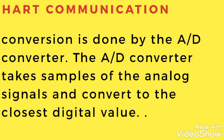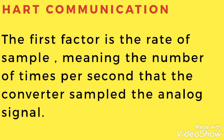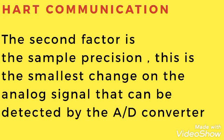Conversion is done by an analog-to-digital converter. The ADC takes samples of the analog signal and converts it into digital. The first factor is the sample rate, meaning the number of times per second that the converter samples the analog signal. The second factor is sample precision, which is the smallest change on the analog signal that can be detected by the ADC.